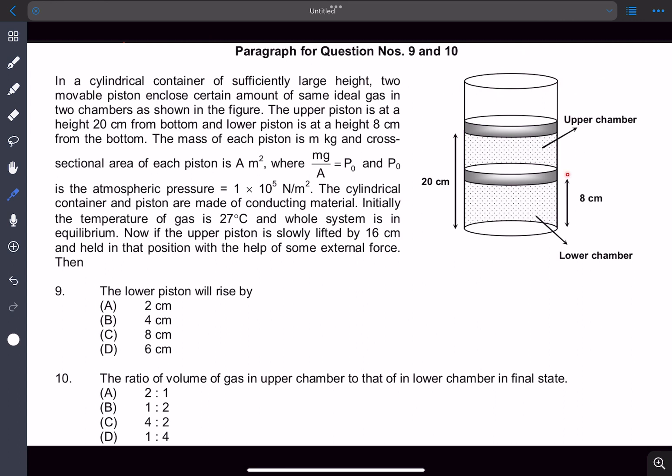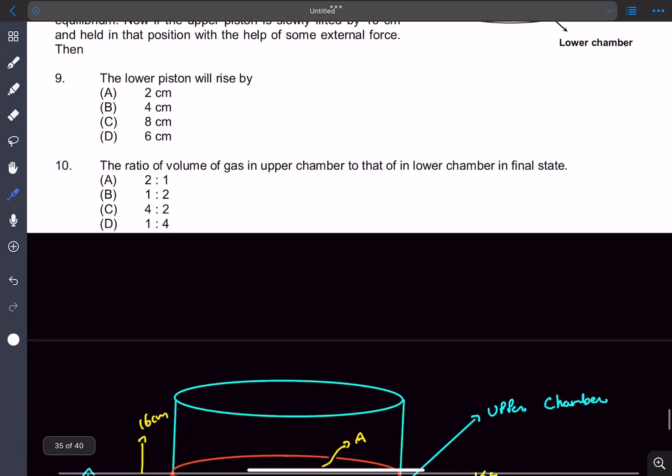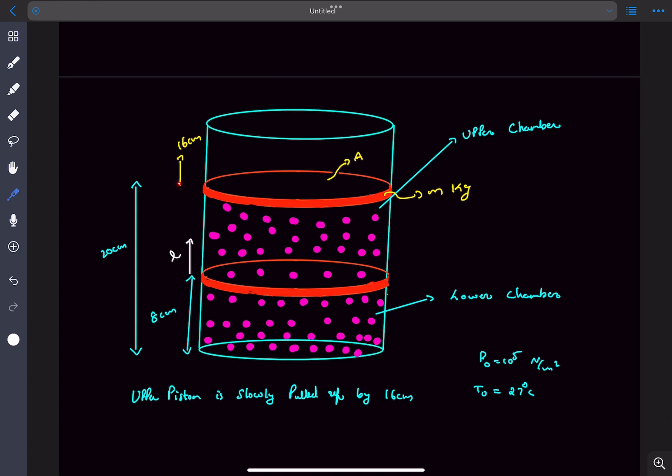We have to determine by what amount the lower piston will rise and the ratio of volumes in the final state. If we solve the first question, the second question is going to be extremely easy. Let's begin with the solution. The upper piston is slowly pulled up by 16 centimeters.